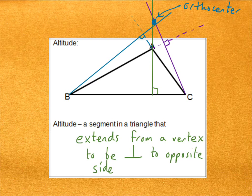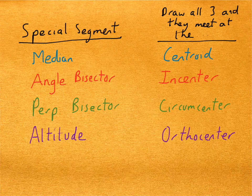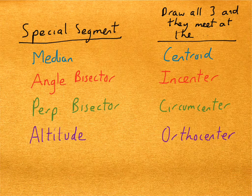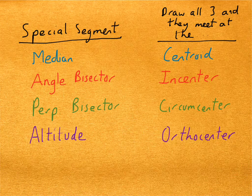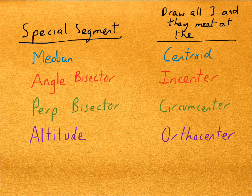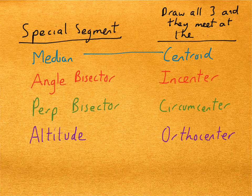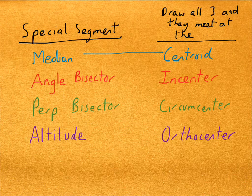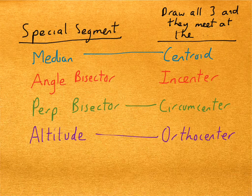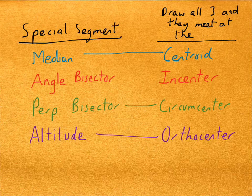So that's our four special segments. Here's a little table just to summarize some of the terms that we used, in case it might be helpful for you. It lists our special segments: the median, the angle bisector, the perpendicular bisector, and the altitude. And if you draw all three, the medians will meet at the centroid, the angle bisectors will meet at the in-center, the perpendicular bisectors will meet at the circumcenter, and the altitudes will meet at the orthocenter. You got all that? Well, we'll be doing some more investigation in class and a little bit better drawings. So see you guys in class.